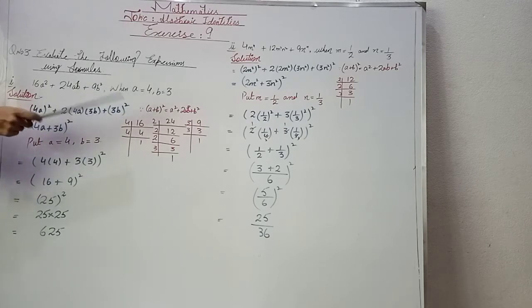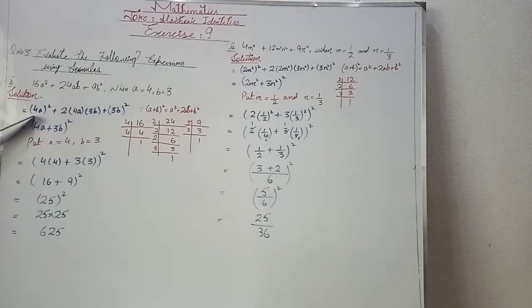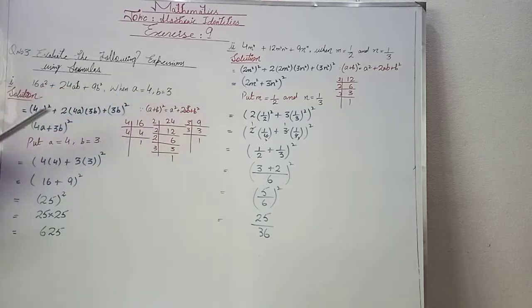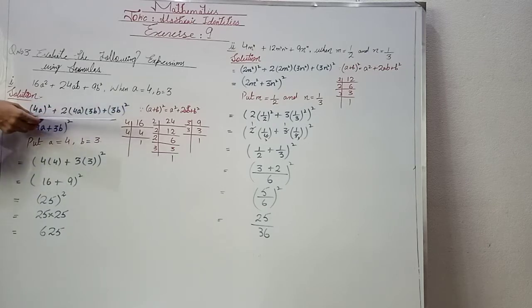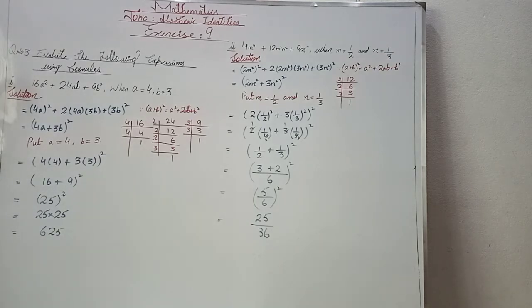For 9, the factors are 3 × 3 = 3², so 9b² = (3b)². Now combining: we match 16a² + 24ab + 9b² to the identity a² + 2ab + b², where a = 4a and b = 3b. Applying the identity, the expression equals (4a + 3b)².